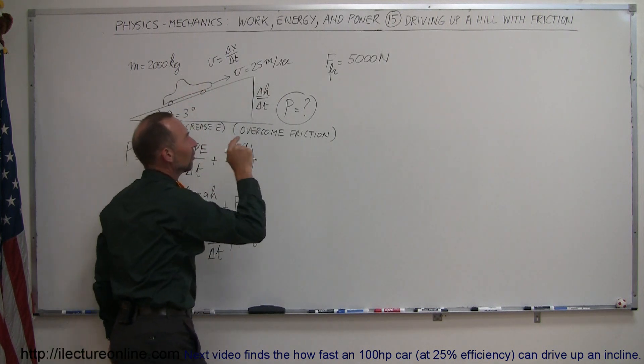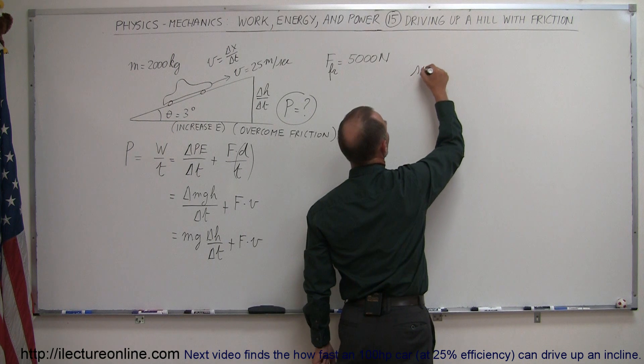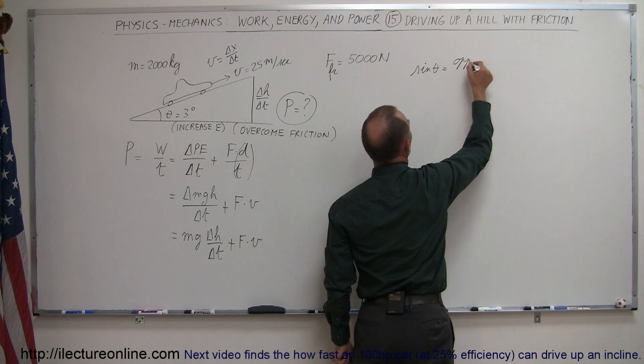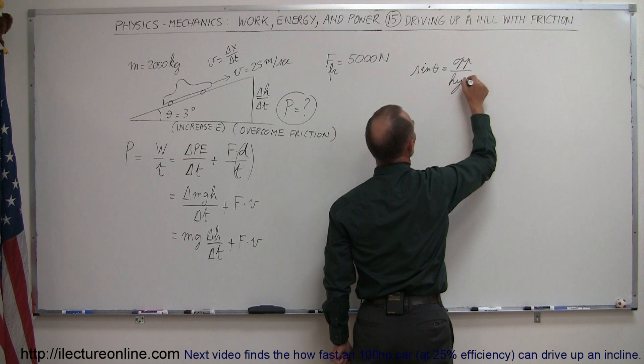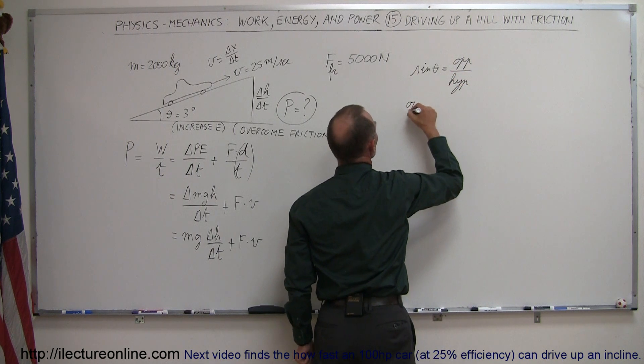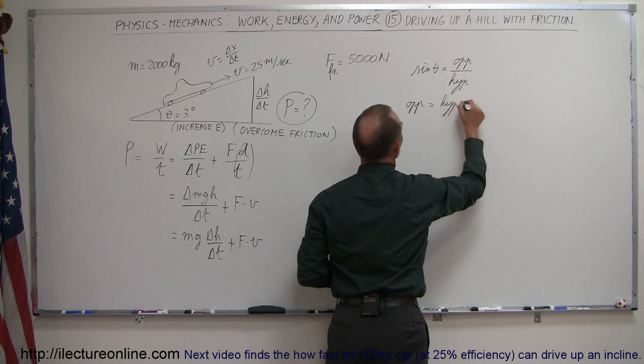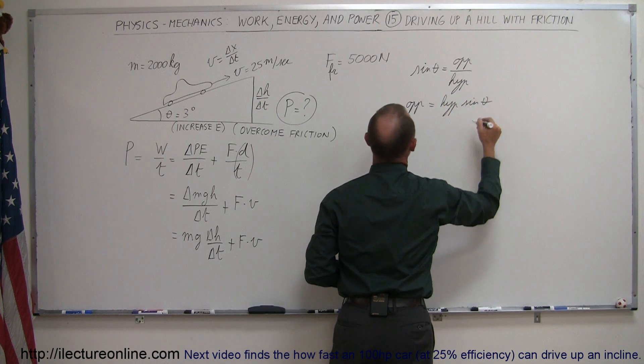we can say that the sine of theta is equal by definition to the ratio of the opposite side divided by the hypotenuse. So we can say that the opposite side, which is what we're looking for, delta H delta T, is equal to the hypotenuse times the sine of theta.